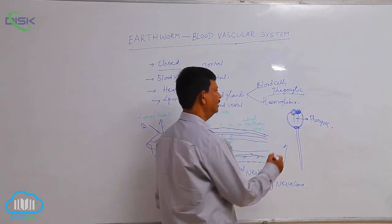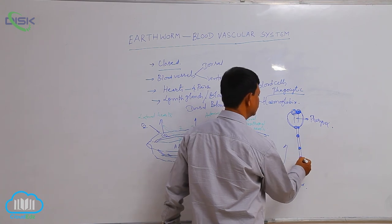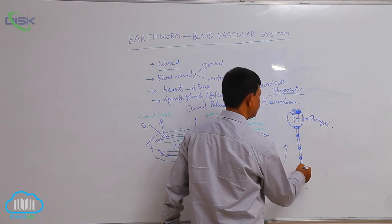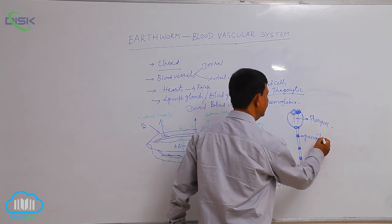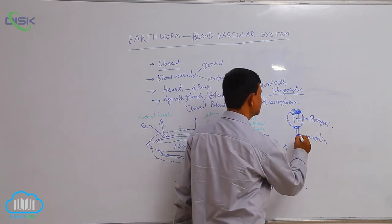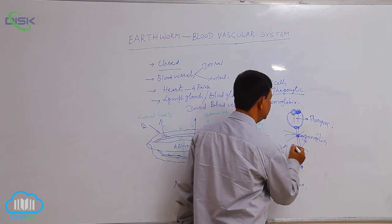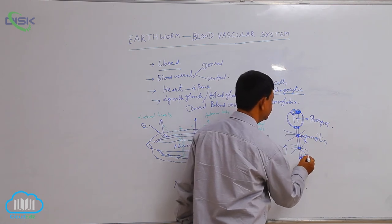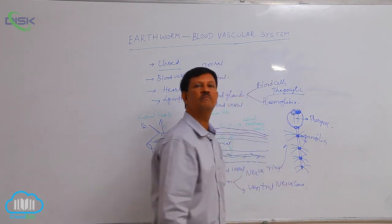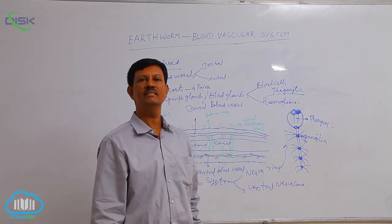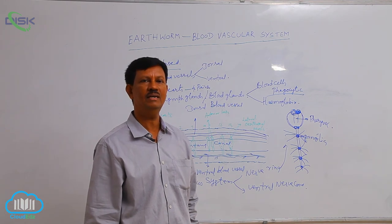A double ventral nerve cord is present, and in each segment it bears a ganglion. From each ganglion, small nerves arise that innervate the structures of that segment. This type of nervous system is found in earthworm, and it controls and coordinates all the activities of the body.